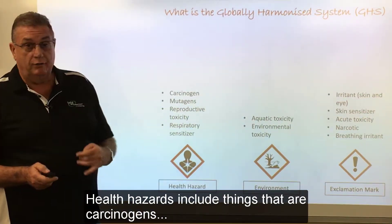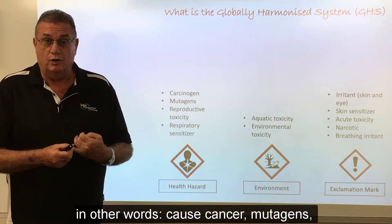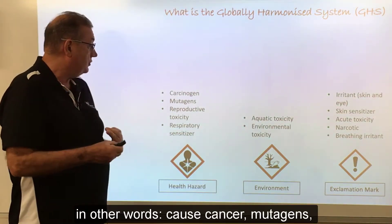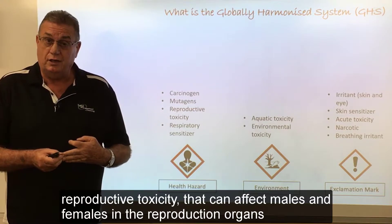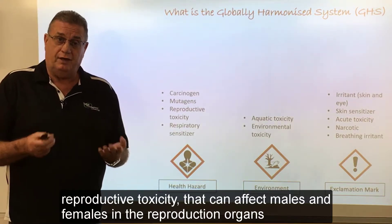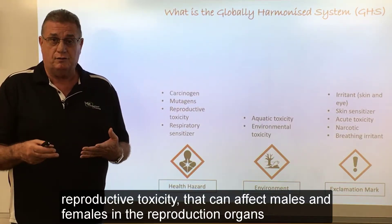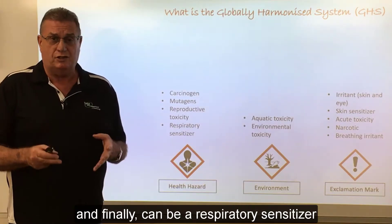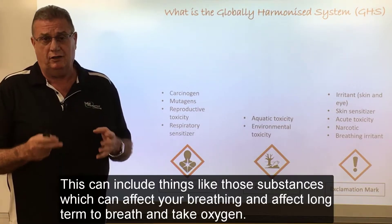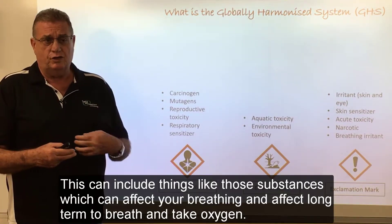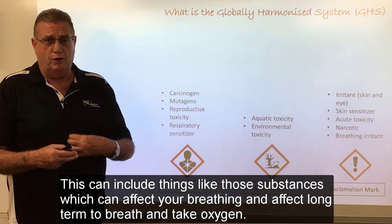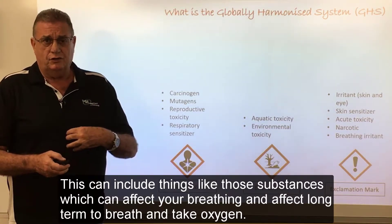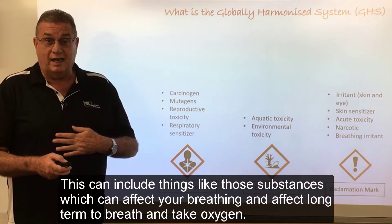The health hazard pictogram includes things that are carcinogens — in other words cause cancer — mutagens, and reproductive toxicity that can affect females and males in the reproductive organs. It can also be a respiratory sensitizer, including those substances which can affect your breathing and affect your long-term ability to breathe and take in oxygen.